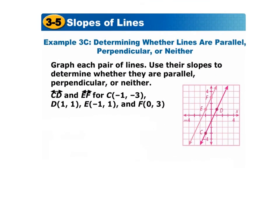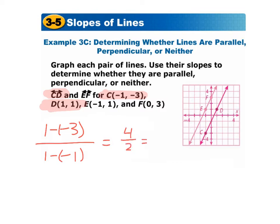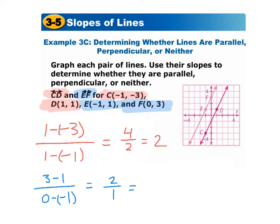Let's find the slope for CD: 1 minus negative 3 over 1 minus negative 1 = 4 over 2 = 2. Now let's find the slope for EF: 3 minus 1 over 0 minus negative 1 = 2 over 1 = 2. We have two slopes that are the same, so these lines are parallel.